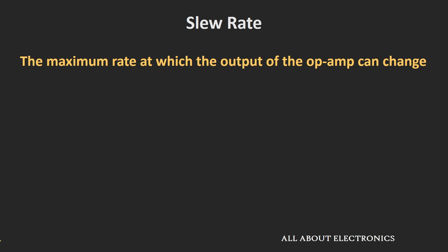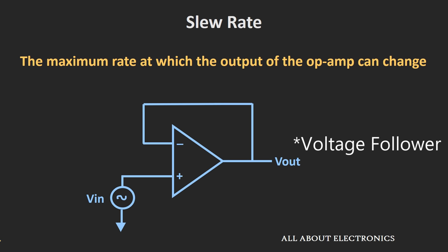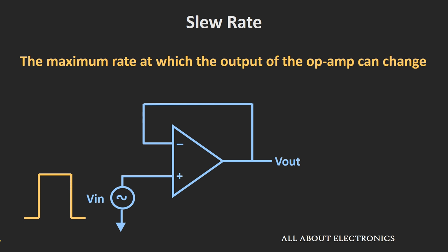Let's understand the slew rate by taking one example. Let's say we have one op-amp configured as a unity follower, meaning the output will follow the input signal. At the input side, we have applied a square wave varying from 0 to 5V, so at the output side we should also get a square wave varying from 0 to 5V.